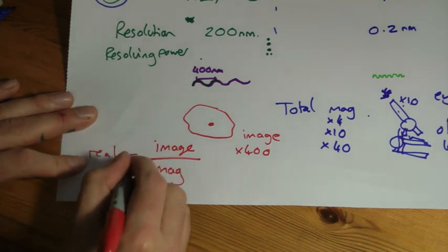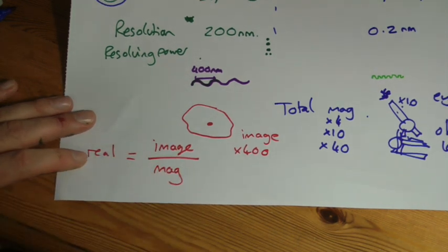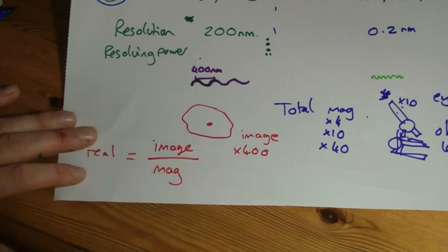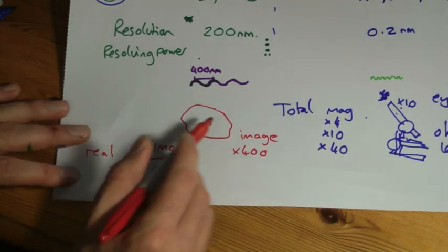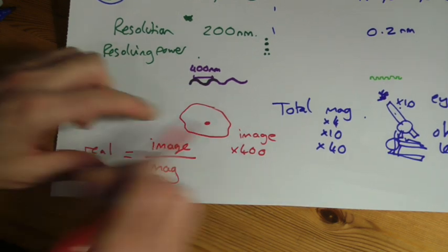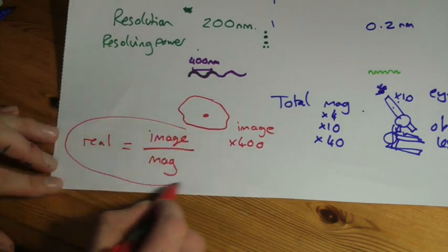So the size of your image divided by your magnification will give you the real size of something. That's the way I would remember it. Image divided by magnification will give you your real size. Because I can picture that in my head. I can think, well if that's the real thing, that must be 400 times smaller. And that is the way I remember it.